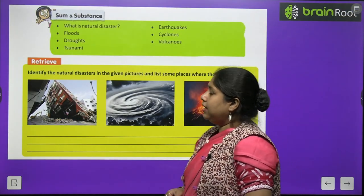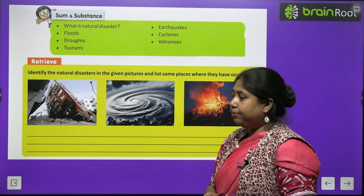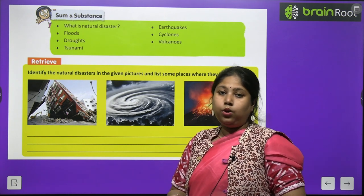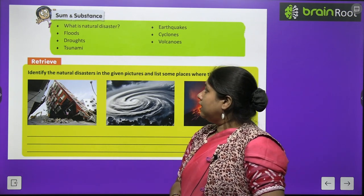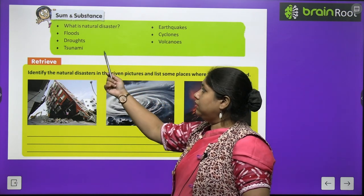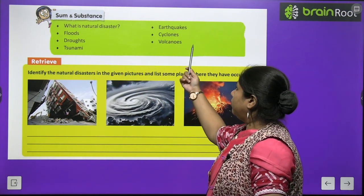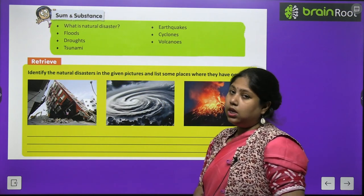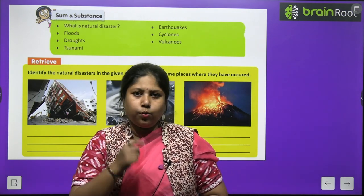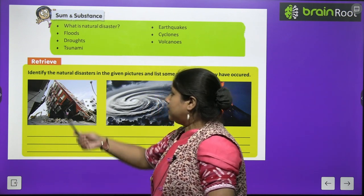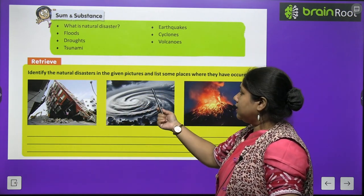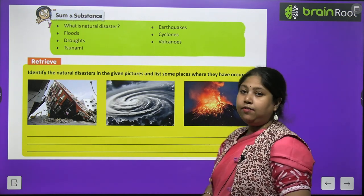Before we start, let's see what all we are going to study in this chapter. We will learn what a natural disaster is, and then study the following disasters: floods, droughts, tsunami, earthquakes, cyclones, and volcanoes. But before we begin the chapter, let's do a quick warm-up exercise. They have asked us to identify the natural disasters in the given pictures and name some places where they have occurred.